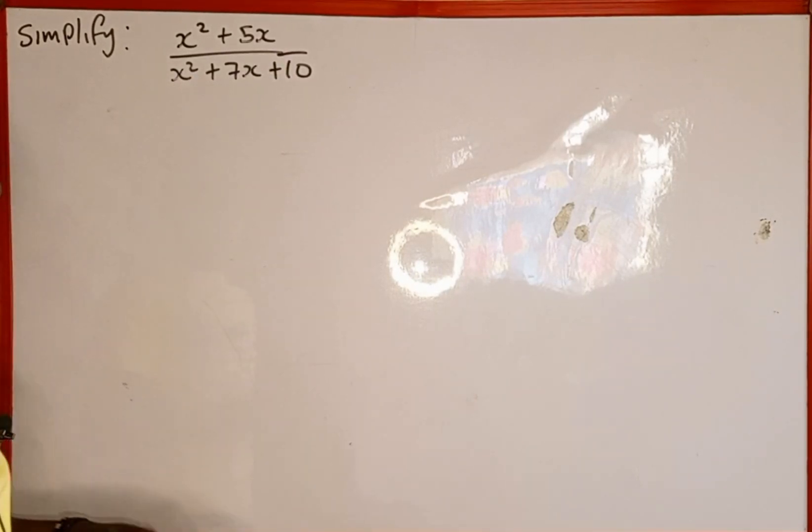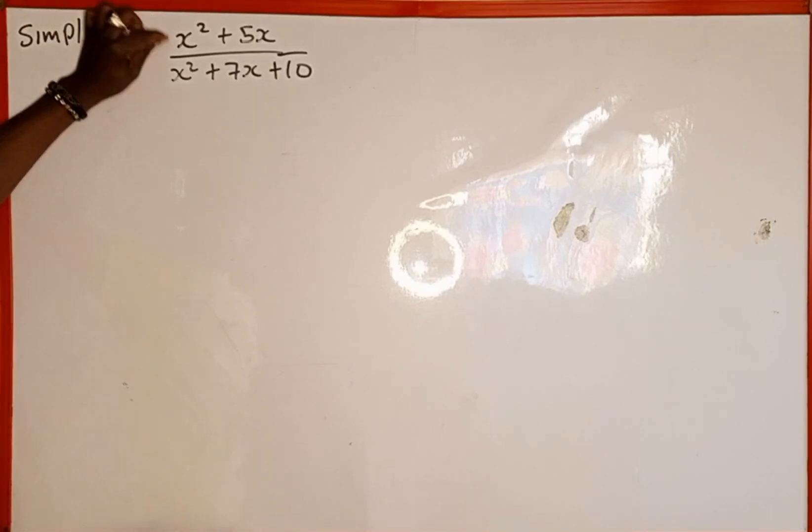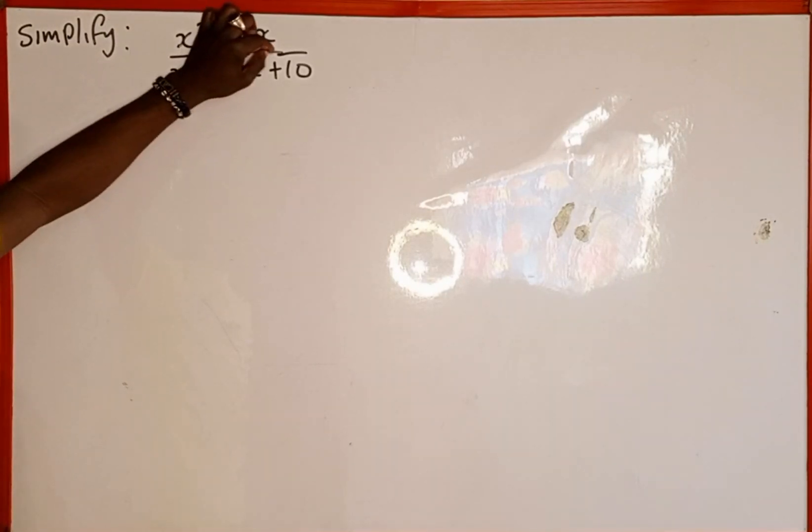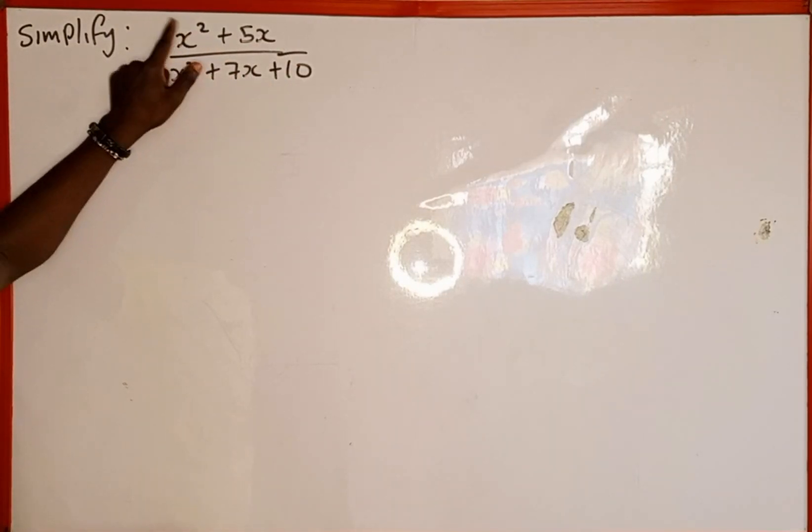What we are going to do, we are going to factorize. If you check this numerator, we have x squared here and we have 5x. So x is common in the numerator.